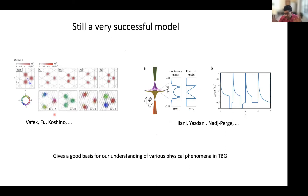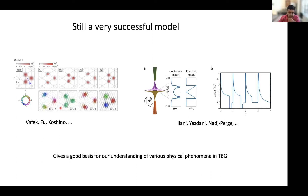In spite of all these differences between real materials and the continuum model, the continuum model of twisted bilayer graphene is still an extremely successful model. Many of the things the model tells us — for example, what the wave functions of the electrons look like — help us understand why one could have the quantum anomalous Hall effect in this system. Even when we try to include the effect of electron correlations, we usually start from the continuum model and ask how correlations change it. This continuum model has given us a very good basis for understanding all the physical phenomena observed in twisted bilayer graphene, and it's a very successful starting point.